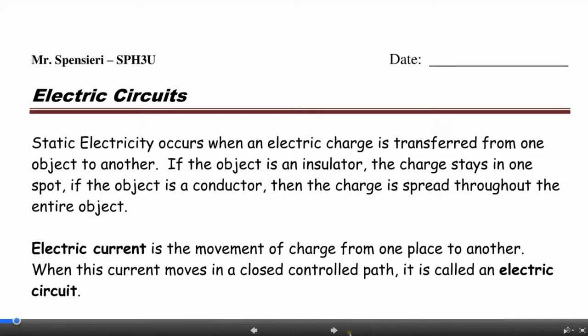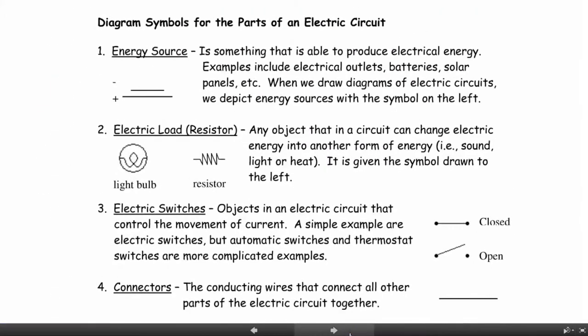To draw out circuits on paper, we have different symbols signifying different components of an electric circuit. Battery sources, for example, are shown as small and large horizontal lines, showing the positive and negative ends of a battery or a source, excuse me.